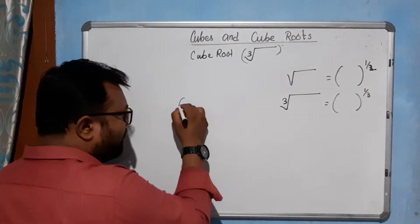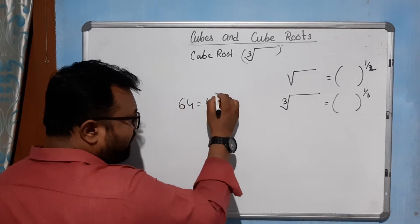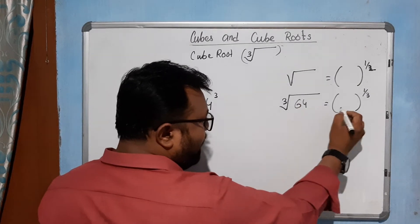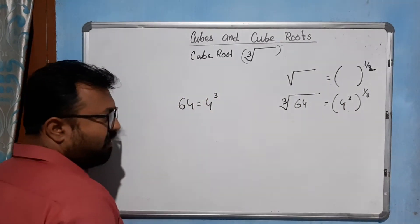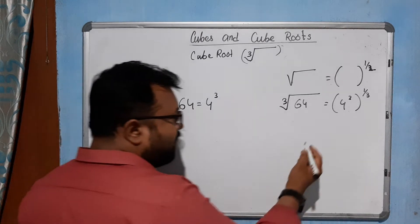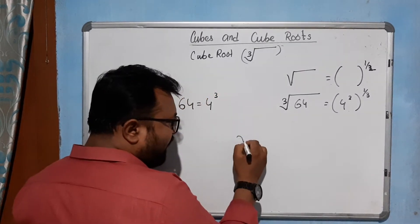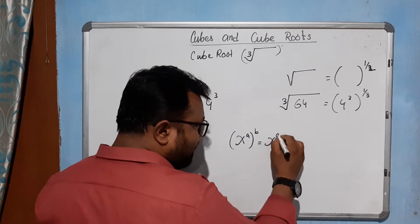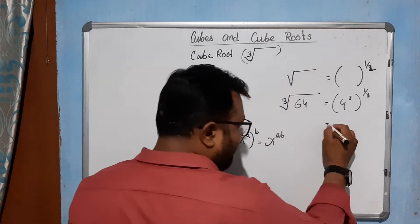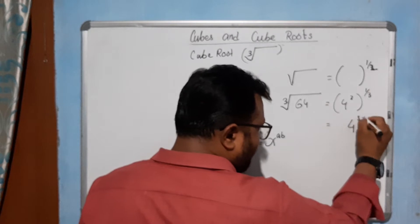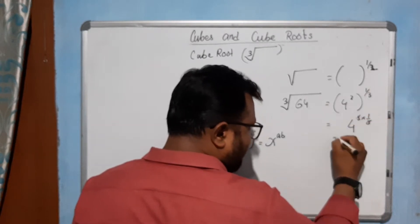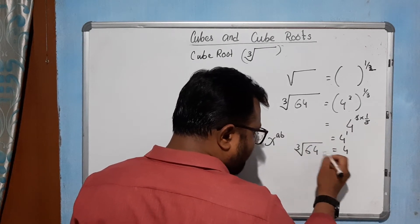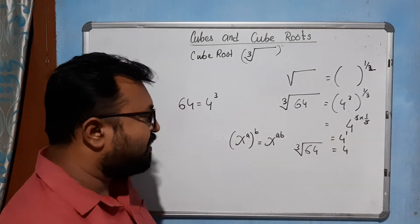Let's take an example. Suppose 64 is 4 cubed, so the cube root of 64 — by the law of exponents we know that x to the power a, to the power b, is equal to x to the power ab. Same way here, cube into one by three: the threes cancel out, leaving 4 to the power 1, which is 4. So we can say the cube root of 64 is equal to 4.